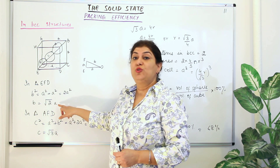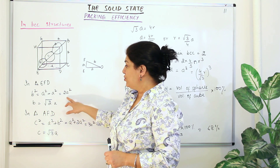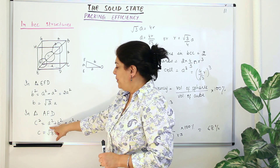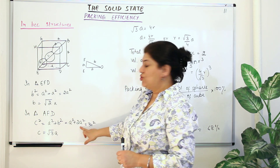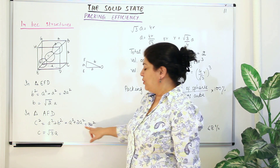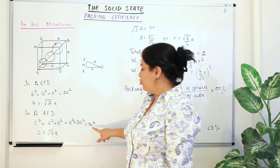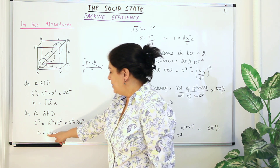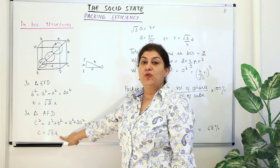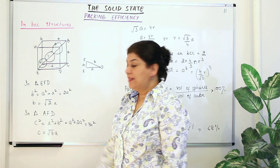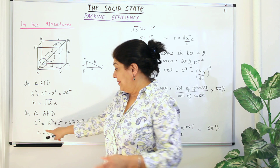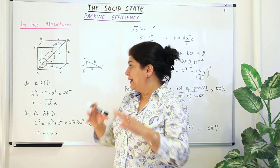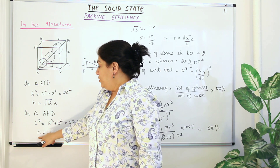So C² = A² + B². We already know B = √2·A, so B² = 2A². Substituting: C² = A² + 2A² = 3A². Therefore C = √3·A. Now that we have the value of C, we express the body diagonal in terms of the radii of the spheres, since our aim is to find the volume occupied by all the spheres in the unit cell.